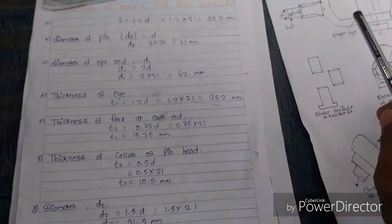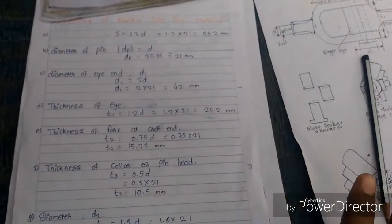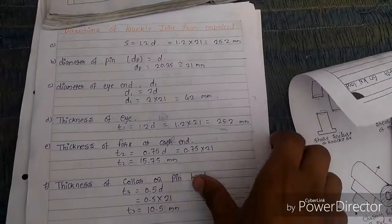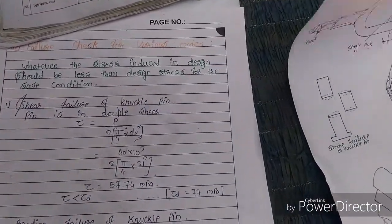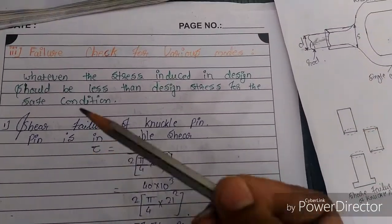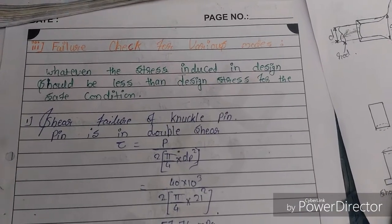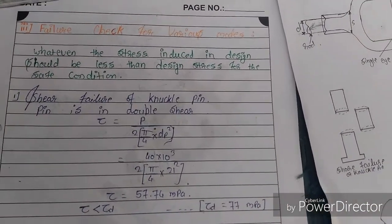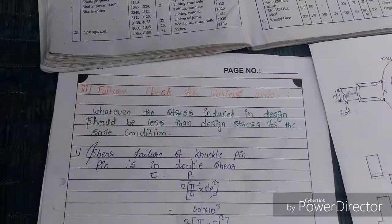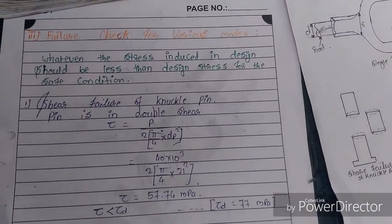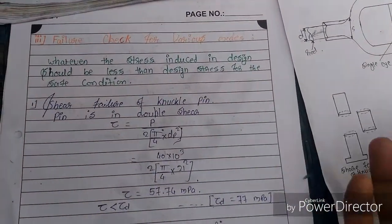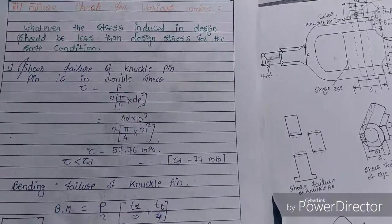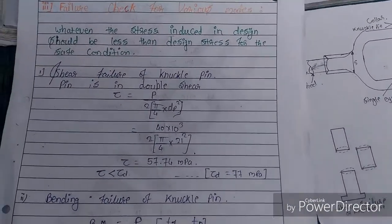The empirical solution gives initial dimensions, but we must check whether these values are correct by verifying various failure modes. For each mode, the induced stress must be less than the design (allowable) stress for a safe condition. We check shear failure for the knuckle pin first.